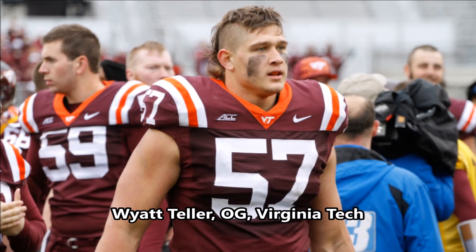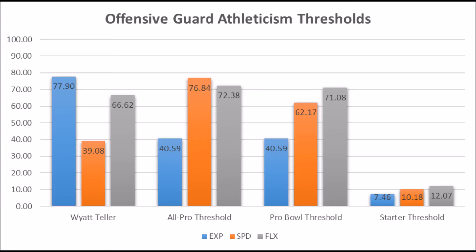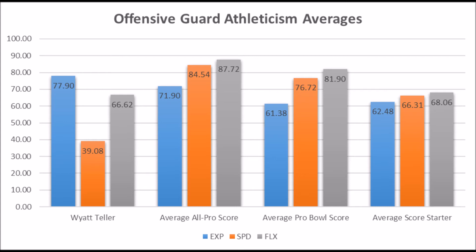Wyatt Teller, offensive guard out of Virginia Tech: athleticism traits of 77.90 in explosiveness, 39.08 in speed, and 66.62 in flexibility. He doesn't quite have the flexibility of an All-Pro or Pro Bowl guard, but he's pretty close. Looking at position averages, he looks more like a long-term starter than an All-Pro or Pro Bowl player, but his explosiveness and balance traits are still pretty intriguing. There's a very good shot he becomes a long-term starter at the position.